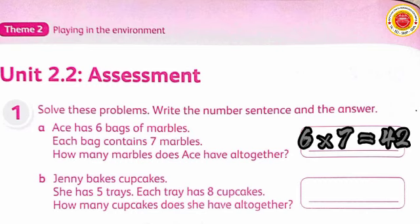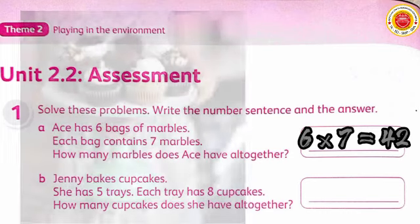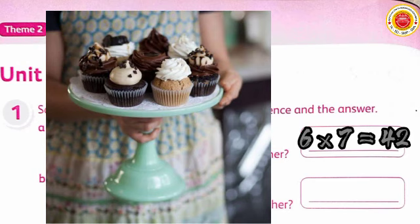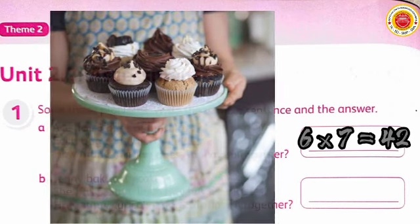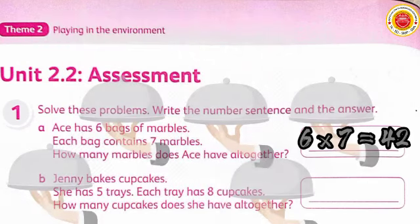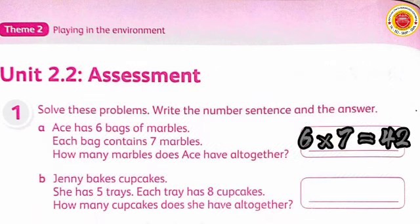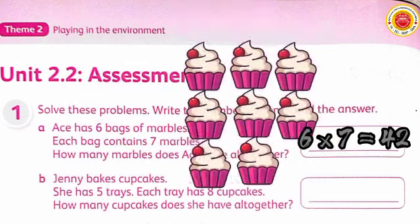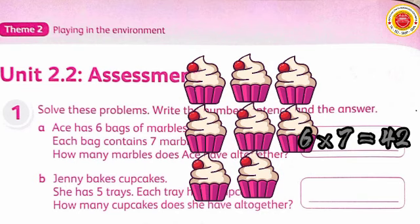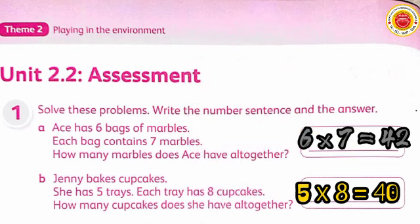B: Jenny bakes cupcakes. She has 5 trays, and each tray holds 8 cupcakes. How many cupcakes does she have altogether? Jay sedang membuat cupcakes — dia mempunyai 5 nampan, dan setiap nampan cukup untuk 8 cupcakes. So the calculation is 5 times 8 equals 40.